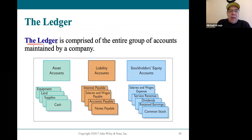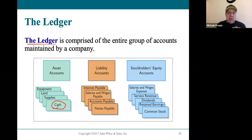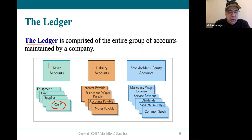The ledger is a very large book that showed all of the accounts in the company in one very large book. Back in the day it was organized so that every single account would have its own section in the ledger. The accounts are listed in balance sheet order. The asset accounts are listed first, in the order they would be on a classified balance sheet. Cash is always going to be the very first account listed in the ledger.